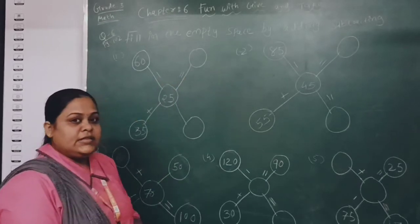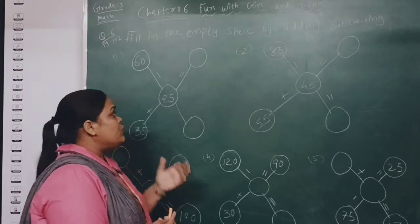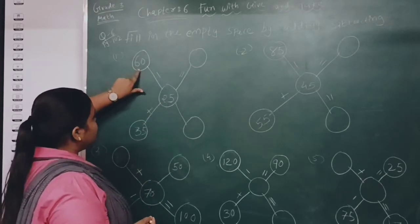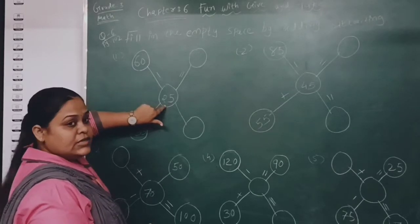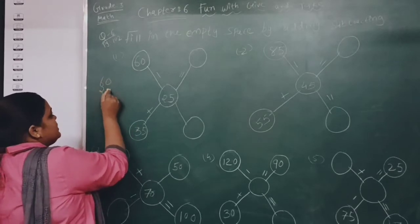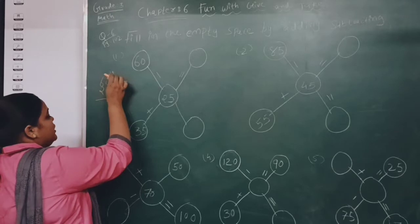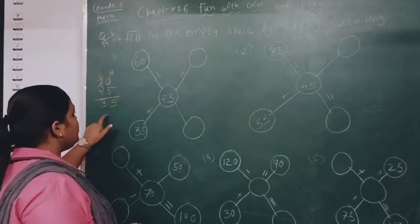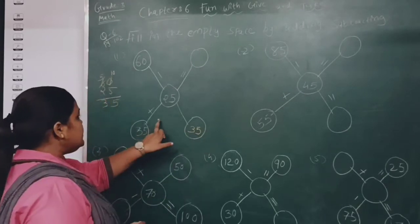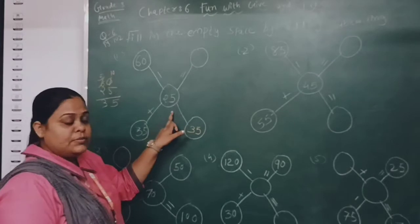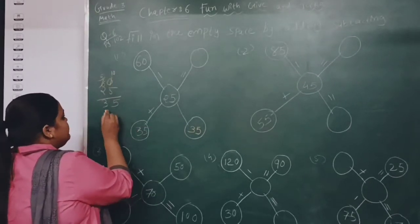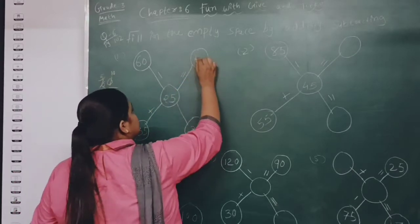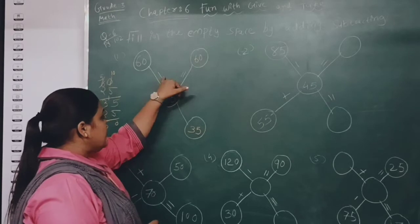Look at the first one. Here 60 is given and 25 is given. We have to do minus: 60 minus 25. As it is not possible directly, we borrow. 10 minus 5 is 5, and 5 minus 2 is 3, so the answer is 35. Then since plus sign is there, we add: 35 plus 25 — 5 plus 5 is 10, 3 plus 1 plus 1 is 5 — so the answer is 60. Check the sign given and then find the answer.